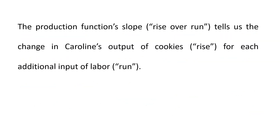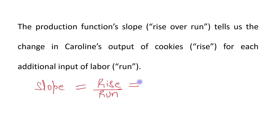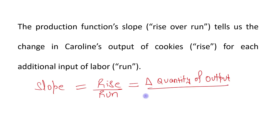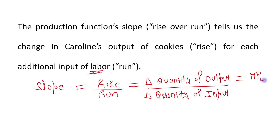The slope of the production function — that is, rise over run — tells us the change in output of cookies (the rise) for each additional unit of labor (the run). We can write the slope as: rise upon run, which equals change in quantity of output upon change in quantity of input.